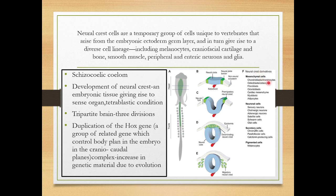The neural crest derivatives include: chondroblasts, chondrocytes, bone cells, osteocytes, cartilaginous cells, fibroblasts, odontoblast cells, cardiac mesenchyme, myoblast muscle cells, and adipocytes — which are lipid-storing cells. All these cells are derived from the neural crest cells.